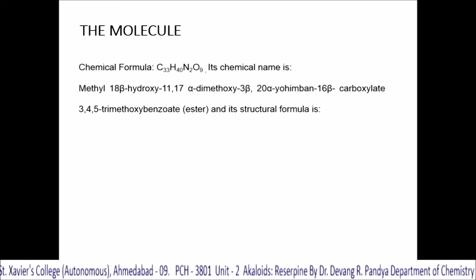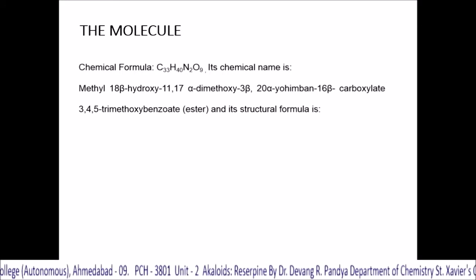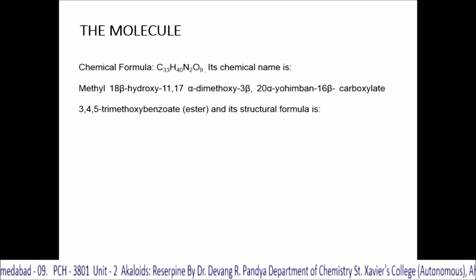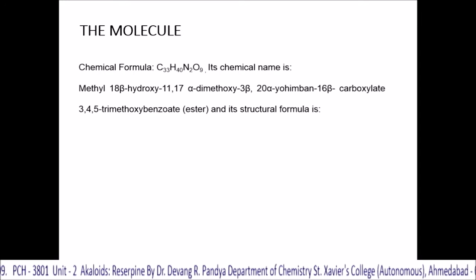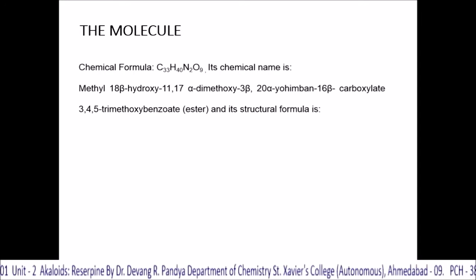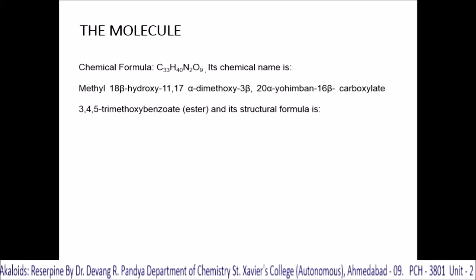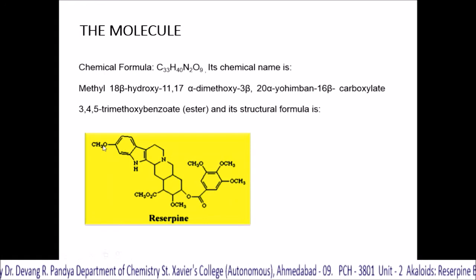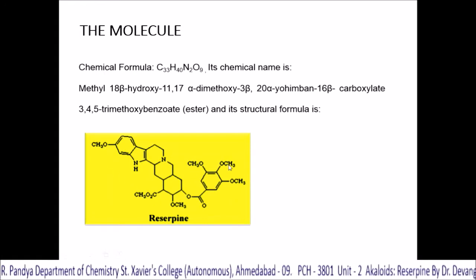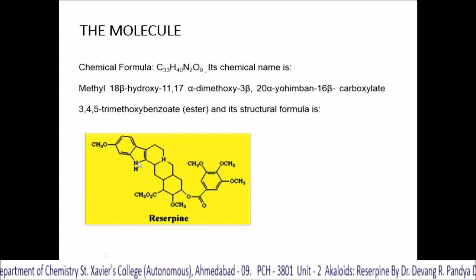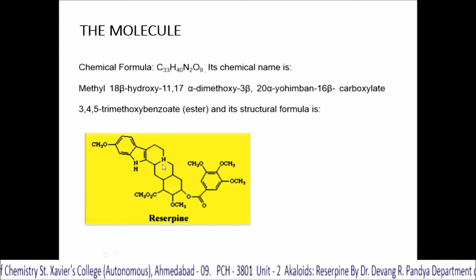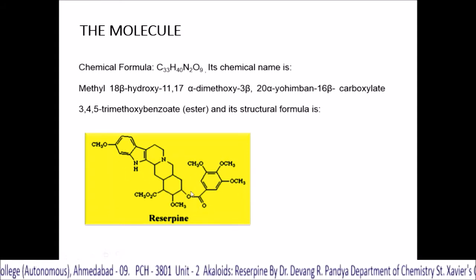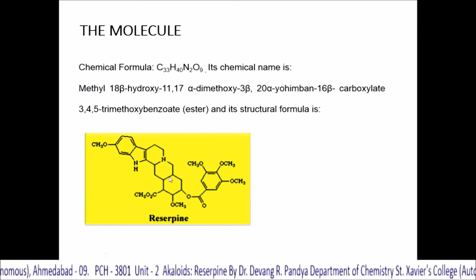This molecule has the molecular formula C33H40N2O9. Its chemical name is methyl 18-beta-hydroxy-11,17-alpha-dimethoxy-3-beta,20-alpha-yohimban-16-beta-carboxylate 3,4,5-trimethoxybenzoate ester. You can see many ring structures — 1, 2, 3, 4, 5 — and 6 methoxy groups are present. There is a secondary amine nitrogen and a tertiary nitrogen as well, along with an ester linkage. This is a very complex and large structure for this alkaloid reserpine.